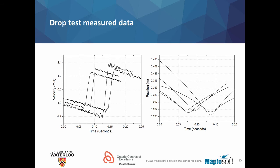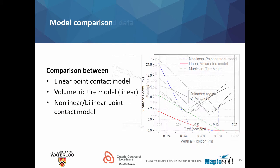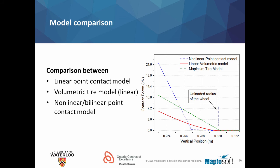The drop tests were performed to simulate different impact speeds from different heights. These plots show the variation of velocity with time and the position of the tire center as a function of time. To match this model behavior, we have used three different tire models. One is a linear point contact formulation which is used extensively in many commercial products. Second is the volumetric tire model that has linear springs and dampers in it. The third is a bilinear point contact model where the stiffness and damping coefficients vary in a piecewise linear fashion. The characteristics of these three models are shown here in this figure.